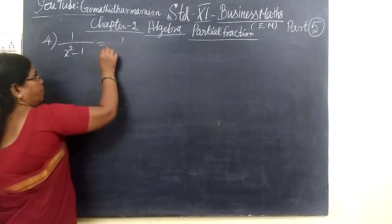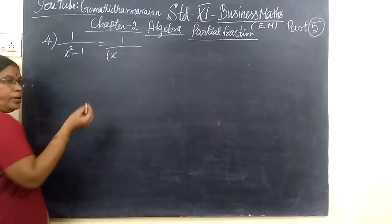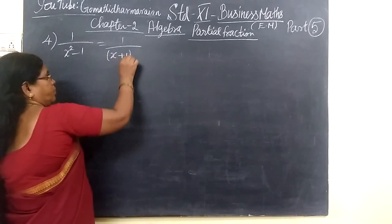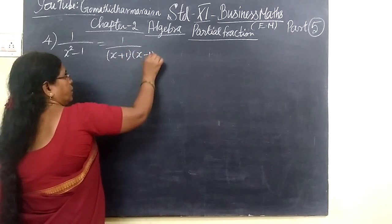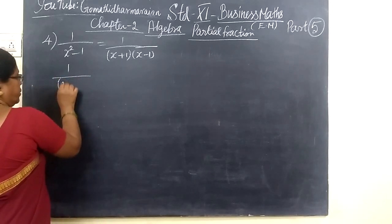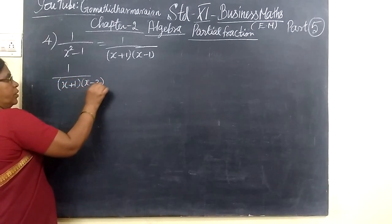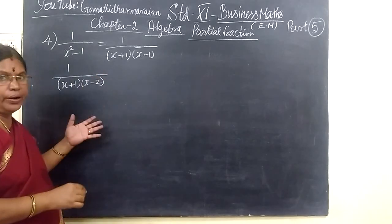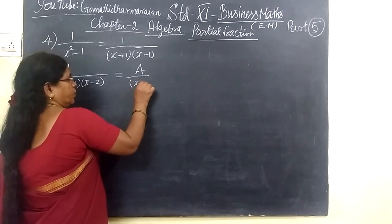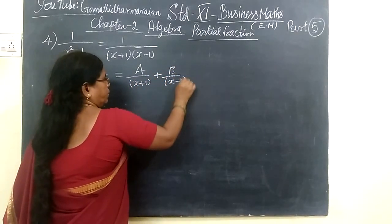The denominator should be written in partial form. So, A plus B into A minus B — that is, S plus 1 into S minus 1. The roots are different, meaning the zeros are different. That means we write A by the first factor plus B by the second factor.